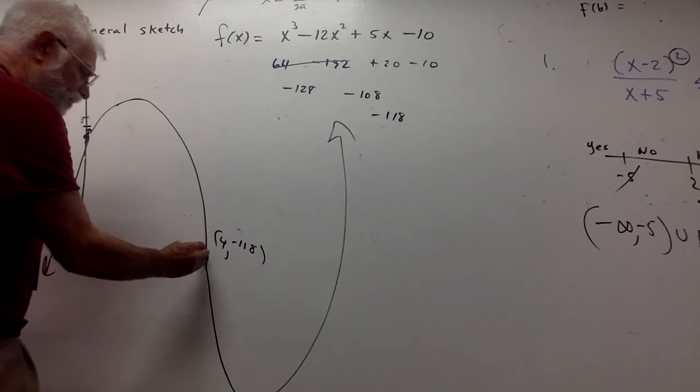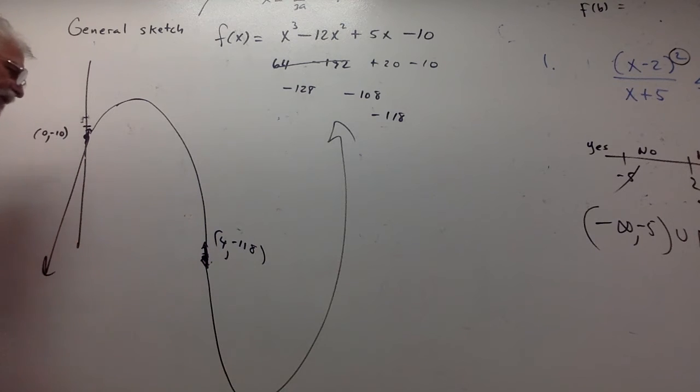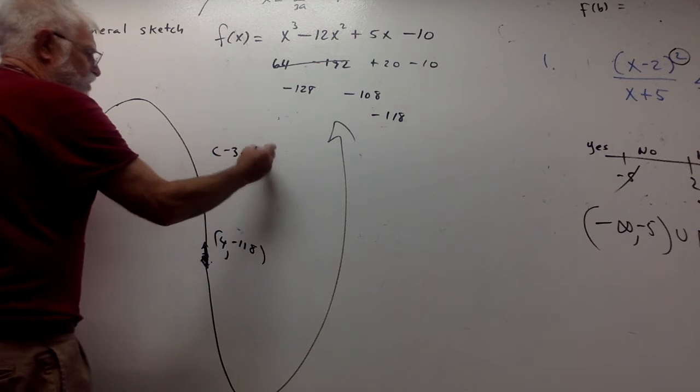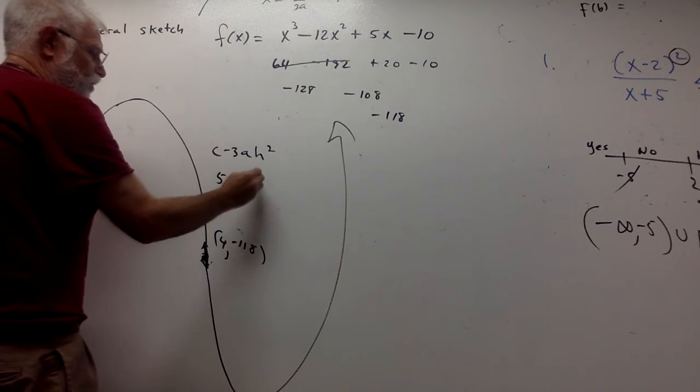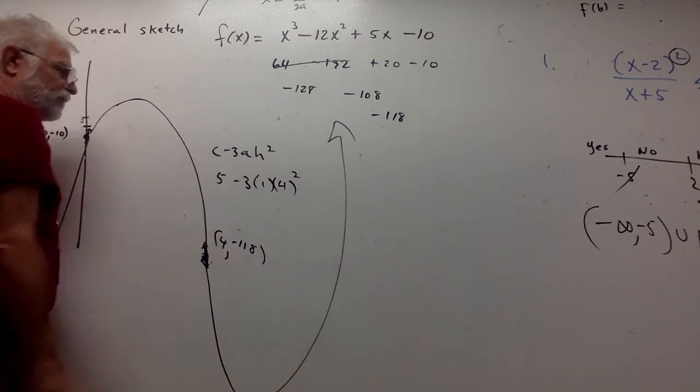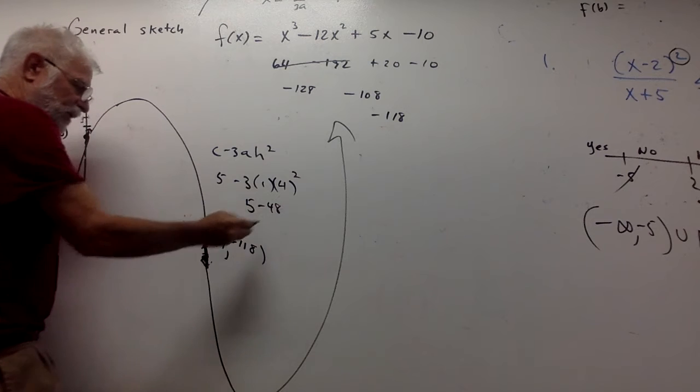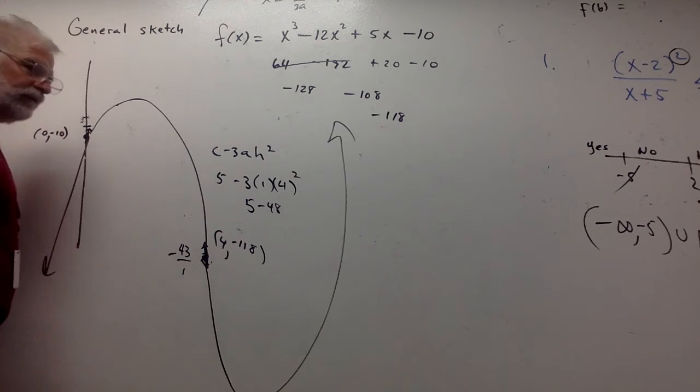So what is the rate of change here? From a non-calculus standpoint, you can find that rate of change by c minus 3a h squared, which in this case, c is 5, minus 3a is 1, h is 4. That's the x value of the point of inflection. That's 5 minus 48. So I'm actually going down at 43 to 1 right here. That's how my y values are changing.